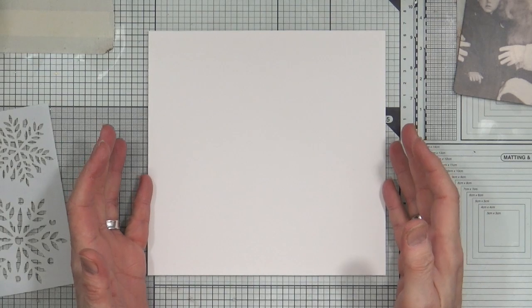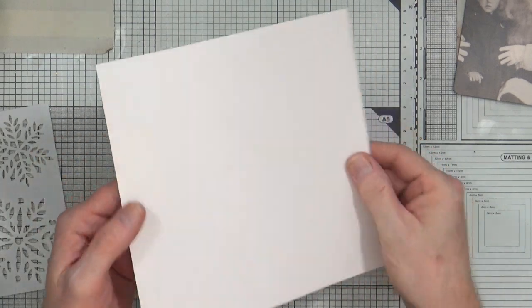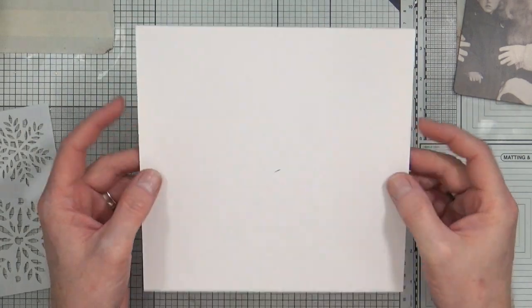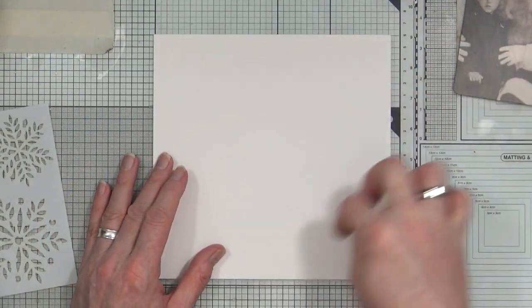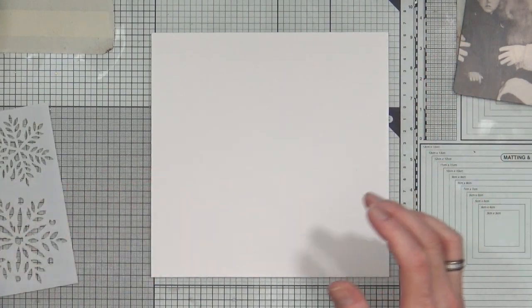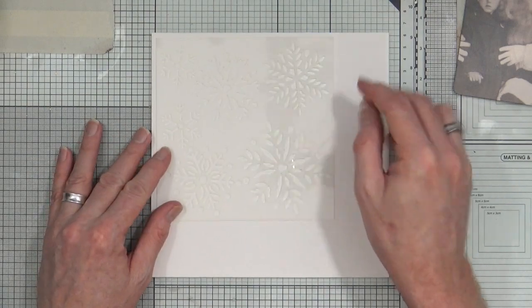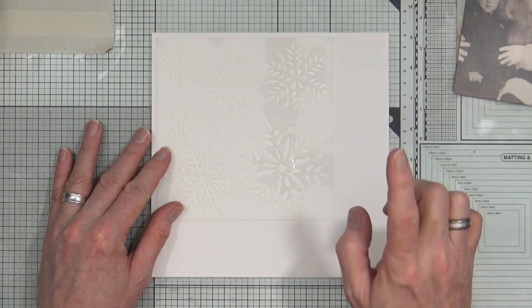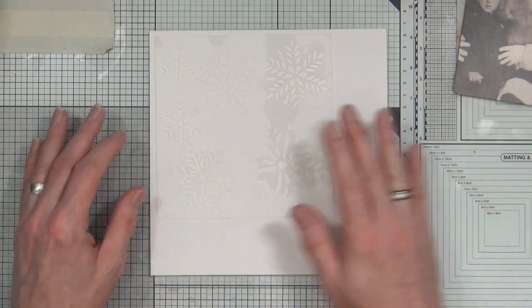This next project in my 8x8 Junk and Disorderly art journal uses a piece of 140 pound or 300 GSM watercolor cardstock that's been cut to 8 inches by 8 inches. I have a snowflake stencil from Indigo Blue. I haven't put anything on this paper yet, so there's been no gesso or anything on this watercolor cardstock.